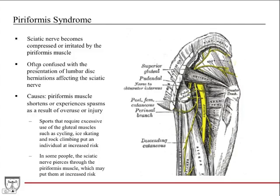Piriformis syndrome occurs when the sciatic nerve becomes compressed or irritated by the piriformis muscle, which is in close approximation to the sciatic nerve as it exits the pelvis. The causes include the piriformis muscle shortening or experiencing spasms as a result of overuse or injury, causing it to become inflamed or enlarged and compress the sciatic nerve. Examples of activities that put individuals at risk include sports requiring excessive use of the gluteal muscles, such as cycling, ice skating, and rock climbing.